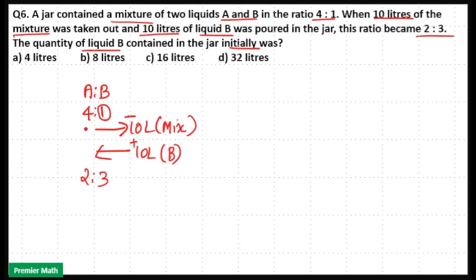Here you can see the difference between 4 and 2 is equal to 2 units, and the difference between 1 and 3 is also equal to 2 units. But you cannot write 2 units equals 10 liters, because this is 10 liters of mixture taken out and 10 liters of liquid B added — these are different things.